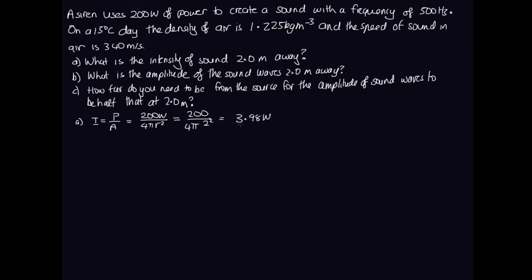We're giving this to three significant figures. We didn't need to use the 15°C value. 500 Hz could be 1, 2, or 3 significant figures — we assume 3. 1.225 has 4, and 340 has 2 or 3 — we assume 3. So we go with three significant figures for our answer.